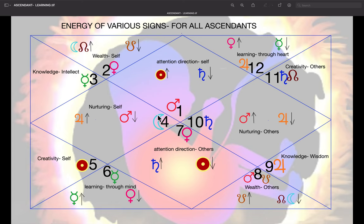If you take even the sign of four, sign of Cancer and sign of Capricorn, they are again opposites. The Cancer sign has Jupiter exalted, Mars debilitated. And the sign of Capricorn has Mars exalted and Jupiter debilitated.